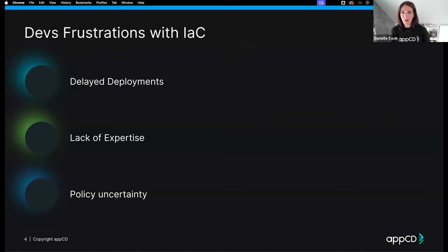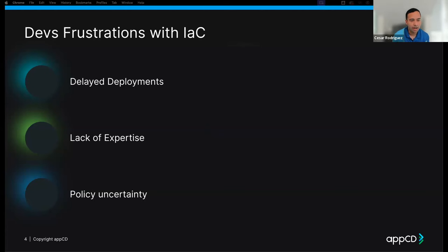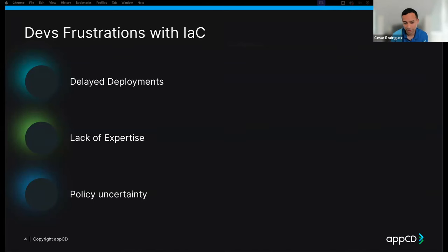Policy uncertainty is another developer frustration. As a developer, you're always trying to get your application ready and deployed, but you may not be aware of all the policies and governance requirements your organization has. Your IAC may not be compliant with those policies, and writing it without knowledge of compliance requirements is a risk for the developer and the organization — especially with no standards around how IAC should be written, leading to vulnerabilities and weaknesses in your security posture.